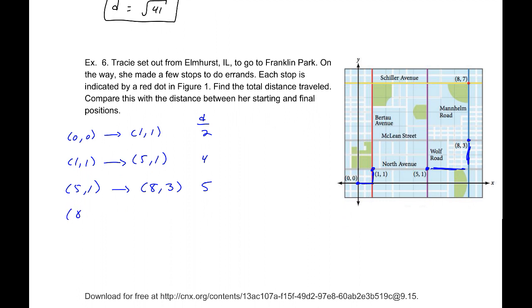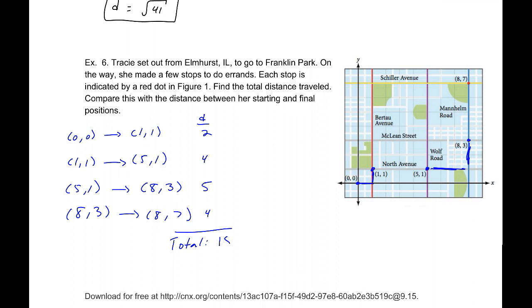Now, from (8, 3) to (8, 7), she is not displaced horizontally any, but vertically displaced 4. So our total distance there is 2 + 4 + 5 + 4, which is 15. She has traveled a distance of 15. We do not have units, so we won't label it.